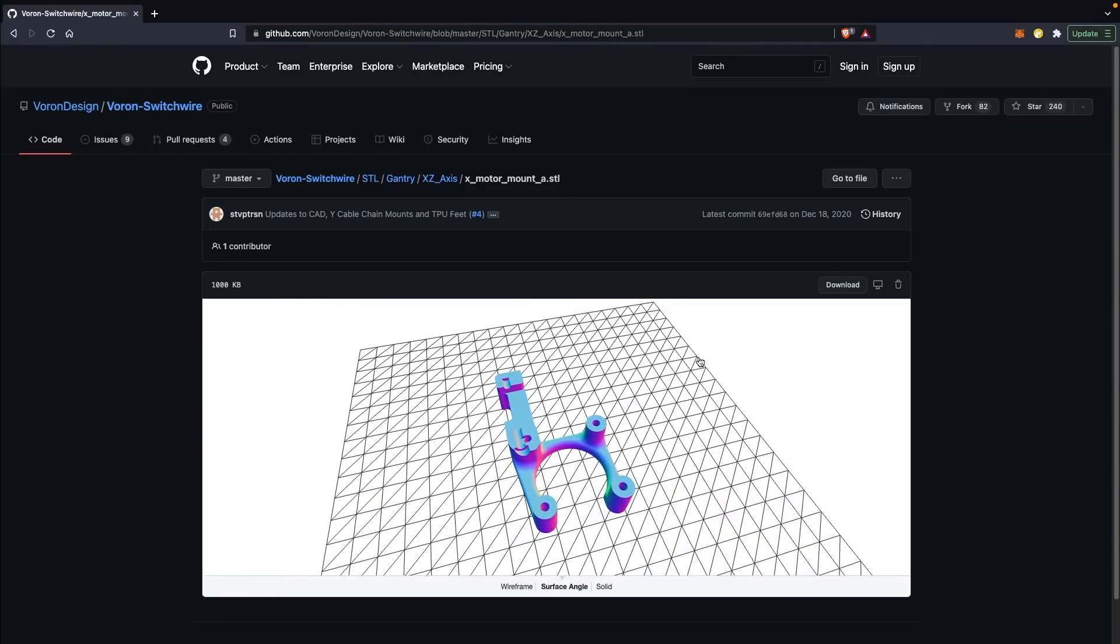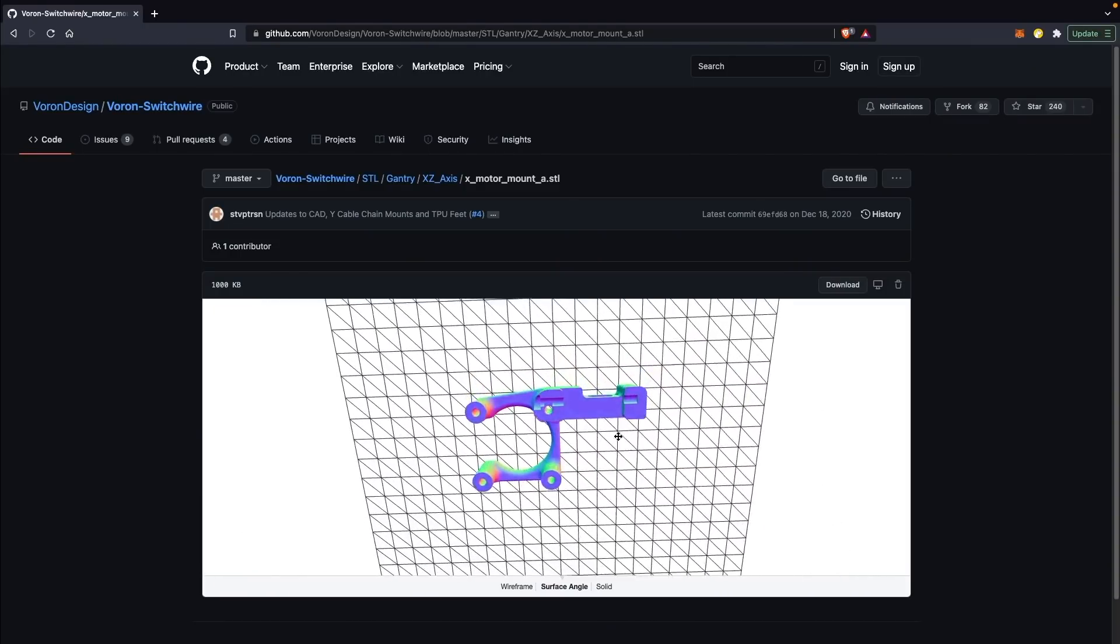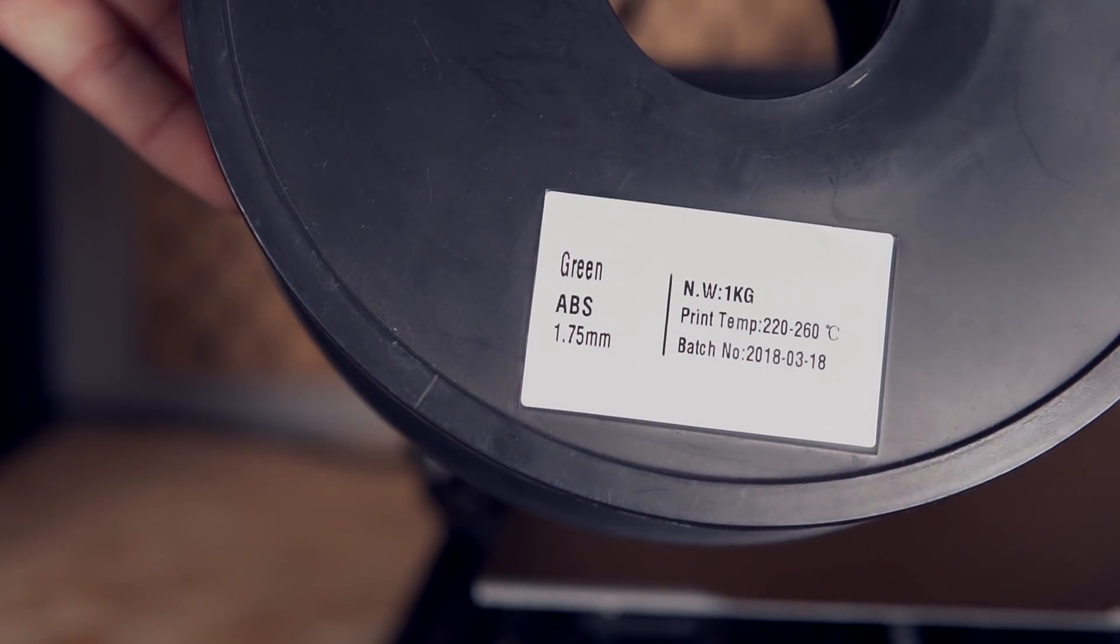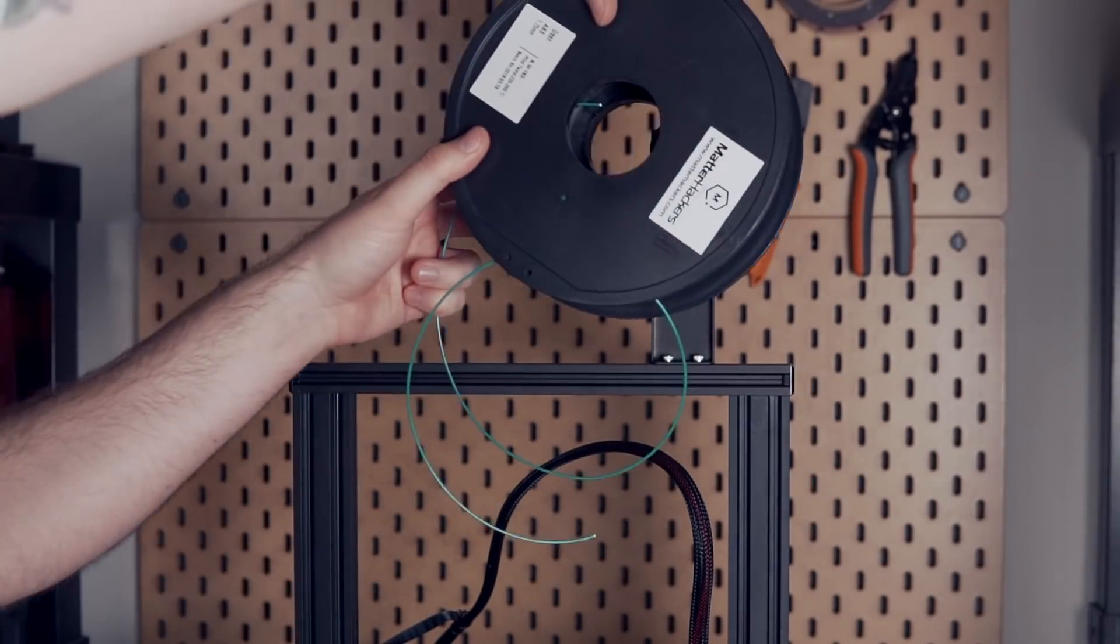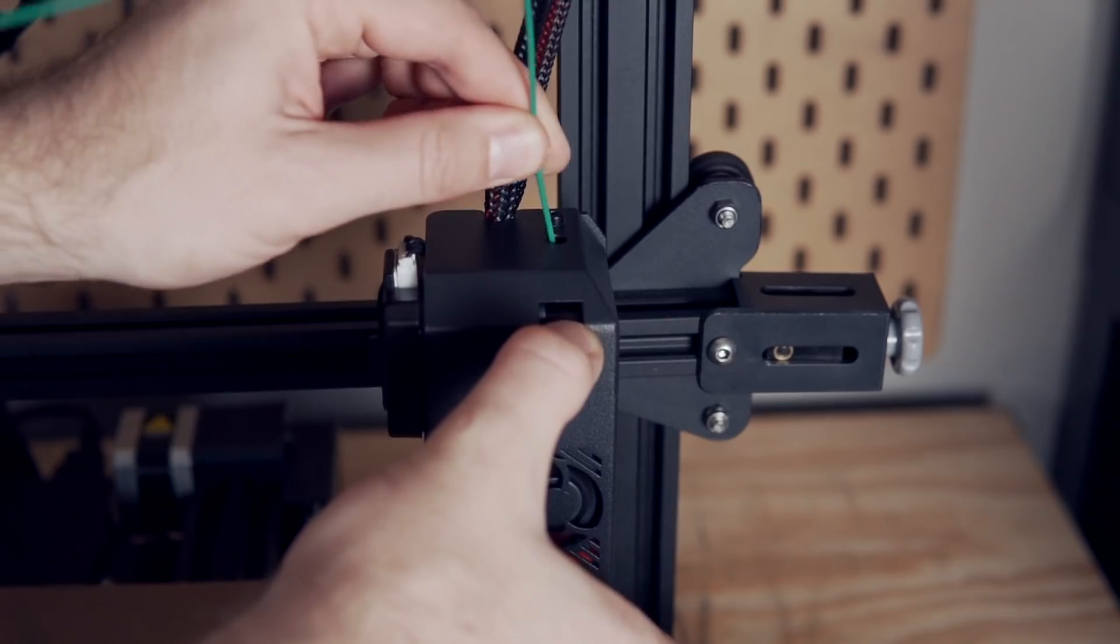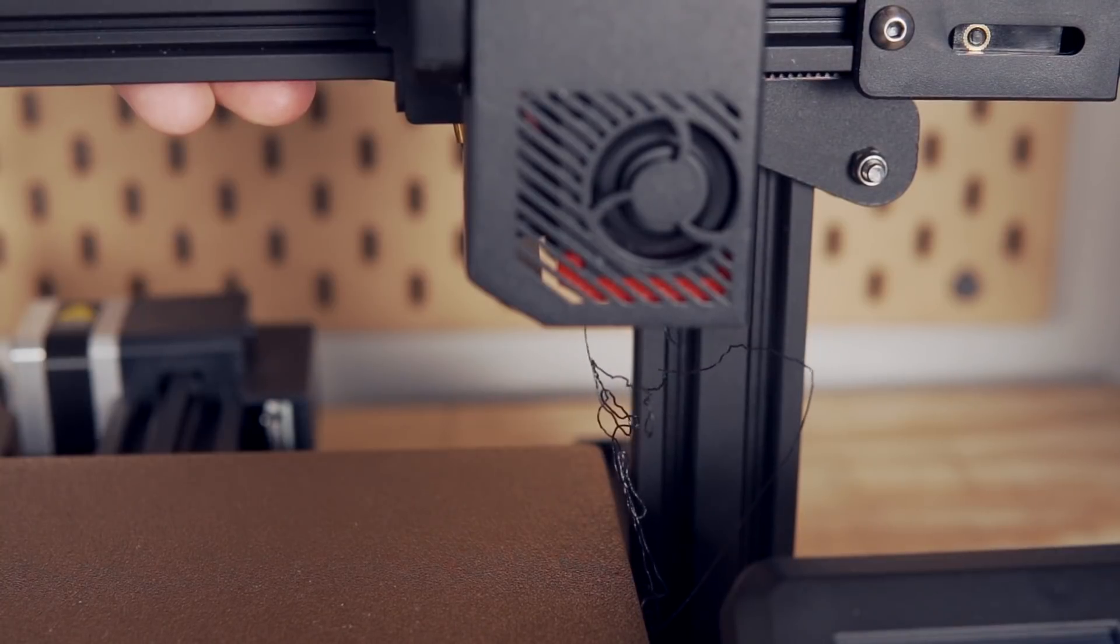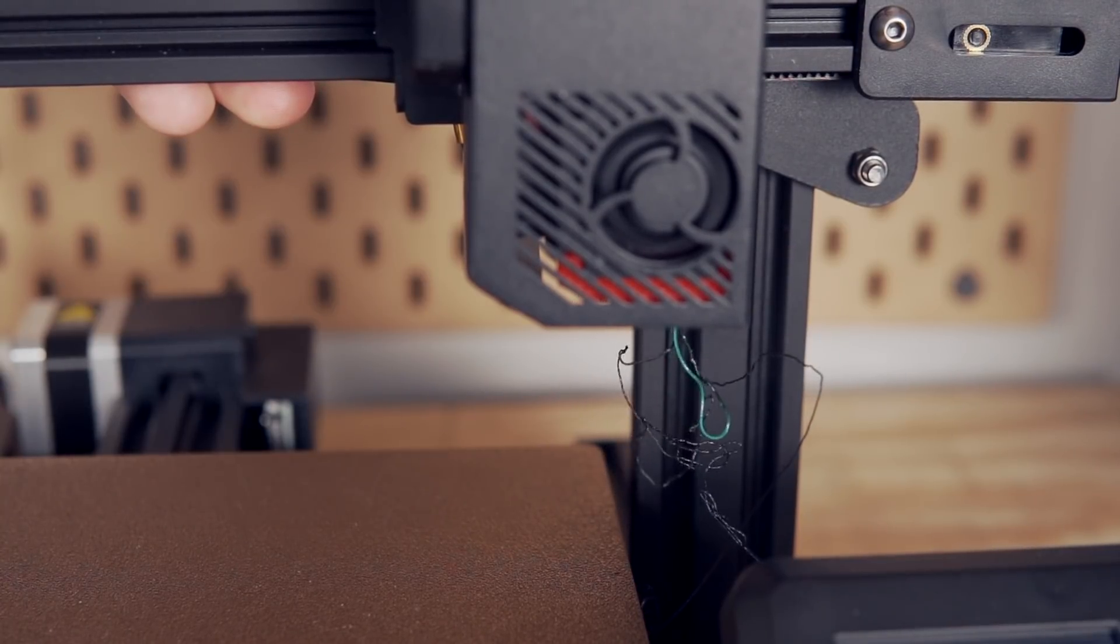For my testing, I started off with a motor mount that I had downloaded for the Voron switchwire that I am currently building, and all the parts are printed out in build series ABS on the Aquila S2. I went with 105 Celsius on the bed and 255 Celsius on the hot end. The 255 Celsius on the hot end is a bit warmer than I would typically print ABS, and I only decided to go a little bit warmer because, again, we are not using an enclosure.